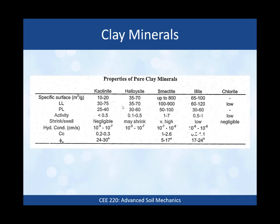The plastic limit for kaolinite is 25 to 40, halloysite 30 to 60, smectite 50 to 100, and illite 30 to 60. The shrink-swell potential is negligible for kaolinite. Halloysite may shrink — drying out causes the individual little straws to split apart and lose adsorbed water. Smectite has very high shrink-swell potential. Illite has low shrink-swell potential because of the potassium cations in the space between the minerals.